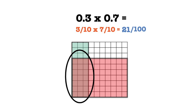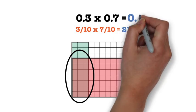Since the original problem asked us to multiply decimals, we need to convert our answer back into decimals. 21 one-hundredths is equivalent to the decimal 21 hundredths.